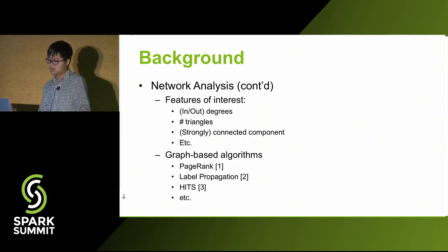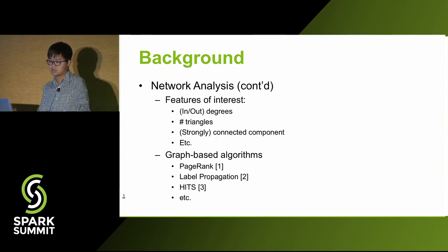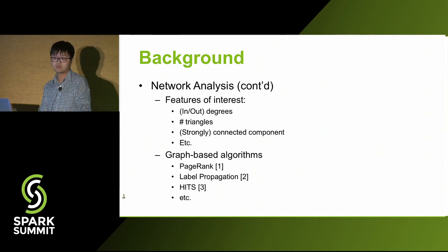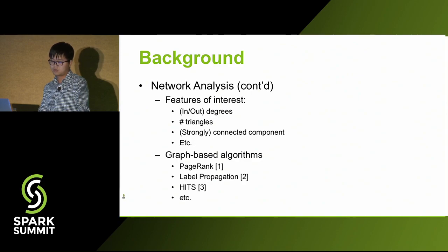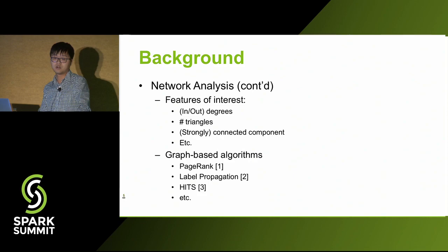When we do network analysis, we are interested in at least two different things. First, how can we extract features related to the network to represent the nodes — for example, the in or out degrees of nodes, or how many triangles a node belongs to, since triangles have a special social meaning in social networks. Second, sometimes we need to develop graph-based algorithms, like PageRank, as well as label propagation or HITS algorithm.